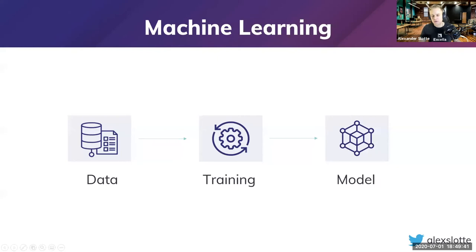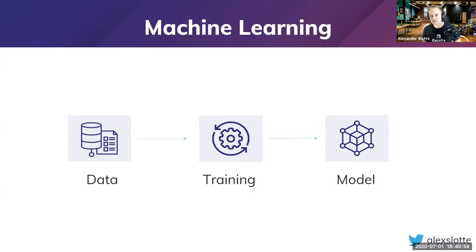What you saw there was a deep fake — one person all the time, and the machine learning algorithm imposed a different person's face on top of him as he was speaking. The model changed his voice as well as his facial expression. That's called deep fakes, and that's definitely the cutting edge of machine learning. It's something you would never be able to program yourself. We won't talk about those things in depth today, but it gives you an idea of what you can do with machine learning.